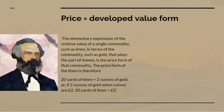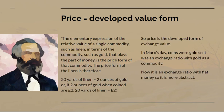Now we come on to price. The elementary expression of the relative value of a single commodity such as linen, in terms of a commodity such as gold that plays the part of money, is the price form of that commodity. For example, 20 yards of linen equals 2 ounces of gold, or if 2 ounces of gold when coined are 2 pounds, then 20 yards of linen equals 2 pounds. So price is a developed form of exchange value. In Marx's day, coins were gold, so purchasing something with gold sovereigns involved an exchange ratio between gold as a commodity and the thing being purchased. Nowadays it's an exchange ratio with fiat money, so it becomes more abstract.